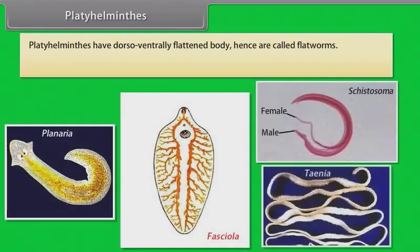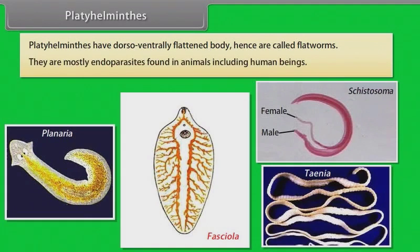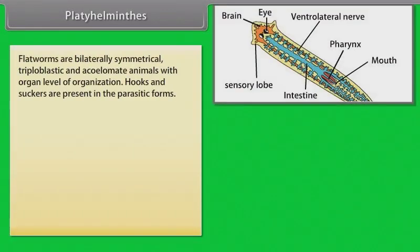Platyhelminthes have a dorsoventrally flattened body, hence are called flatworms. They are mostly endoparasites found in animals including human beings. Flatworms are bilaterally symmetrical, triploblastic and acoelomate animals with organ level of organization. Hooks and suckers are present in the parasitic forms.